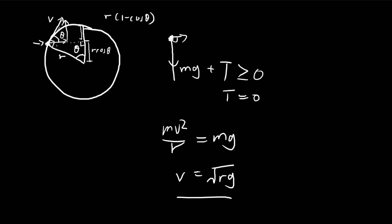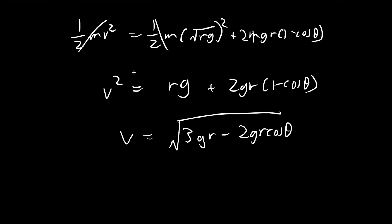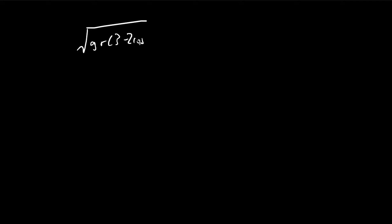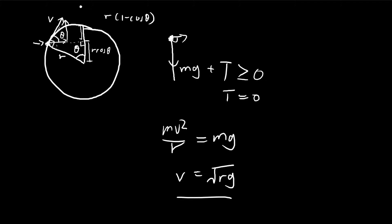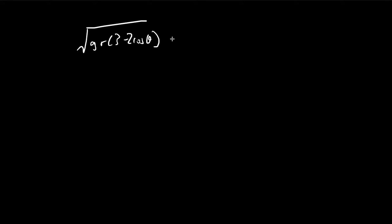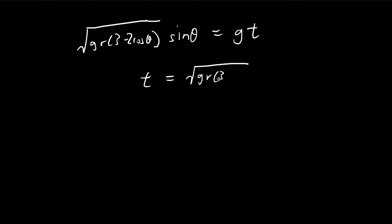We want the particle to reach its maximum height right above the center of the circle. First, we find the time required to reach maximum height, which occurs when the vertical velocity equals zero. The vertical component of velocity is v times sine theta. The time for the vertical velocity to decelerate to zero under gravity is t equals v sine theta divided by g.